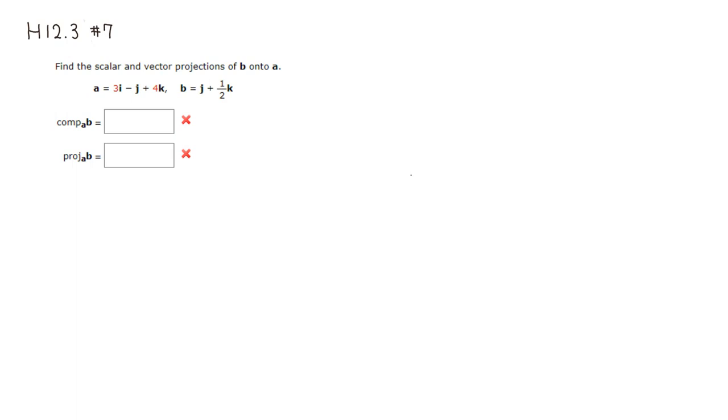I like the other notation better, so I'm going to rewrite this as vector A = (3, -1, 4) and vector B = (0, 1, 1/2).